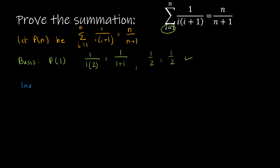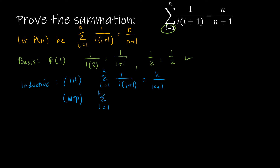Now let's look at our inductive step. We start with our inductive hypothesis assuming that the summation as i goes from 1 to k of 1 over i times i plus 1 is equal to k over k plus 1. We're assuming that is true. Now we have to prove that if I add 1 to k, making this k plus 1, I will get k plus 1 over k plus 2.